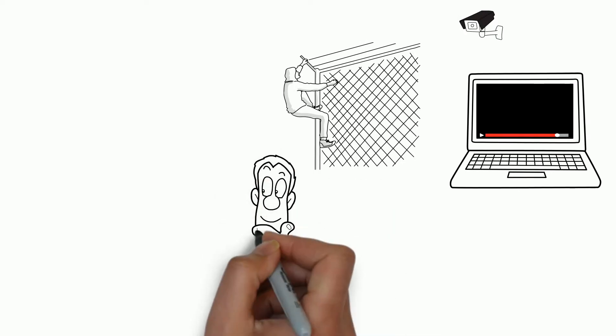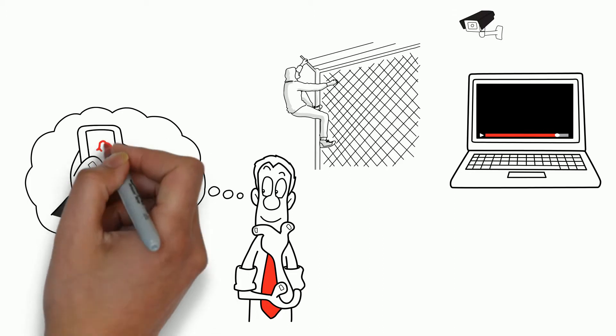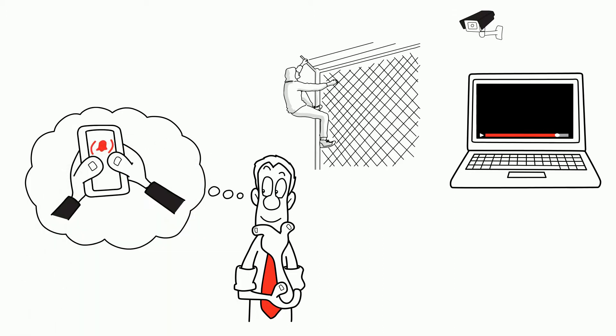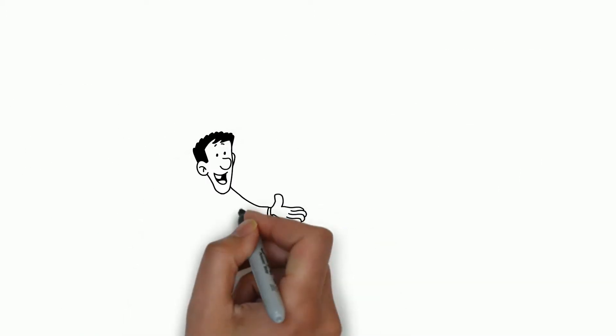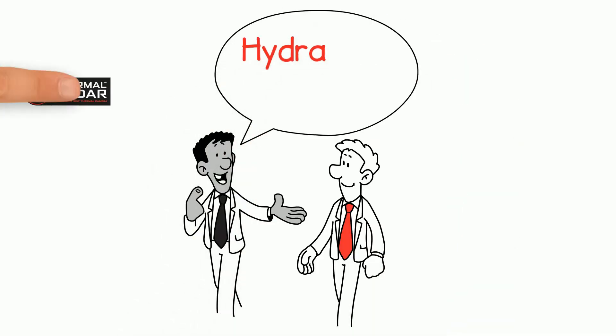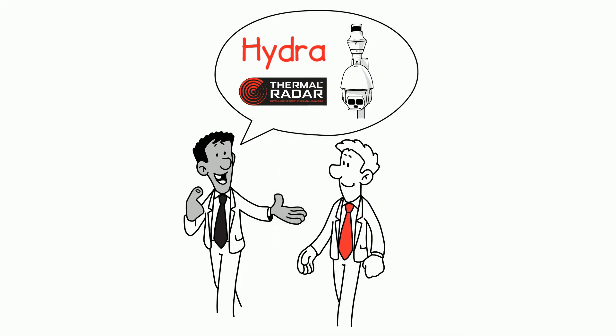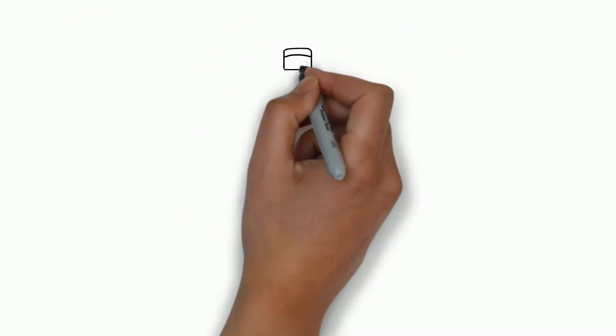He wants more than just a recording of an intruder on his property. He wants real-time notifications when there is a potential threat to his property. Mike talked with a friend and colleague who uses a new smart camera solution called Hydra by Thermal Imaging Radar that will do everything that Mike is looking for from a single unit.